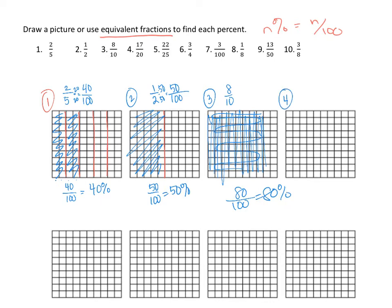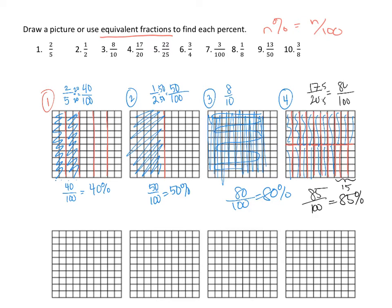For number 4, we're talking about 17 twentieths. Twentieths mean we take all of our tens and split them in half, so now you can see 20 pieces. I need to have 17 of those — the top half covers 10, then 11, 12, 13, 14, 15, 16, 17. That leaves 3 times 5 = 15 blank ones, meaning 85 out of 100 were filled — which is 85%. You could also multiply 17 twentieths by 5 to get the 85 out of 100 as well.